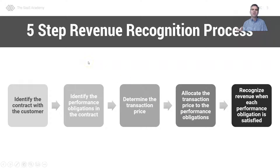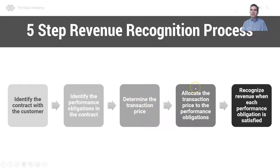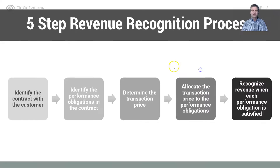However, it does follow a five-step revenue recognition process. The first is to identify the contract with the customer — what exactly did we sell. Second, identify the performance obligations — what are we now obligated to do to deliver or to perform. Third, determine the transaction price, a clear selling price in the contract. Fourth, allocate the transaction price to each performance obligation. And fifth, recognize revenue when each performance obligation is satisfied.